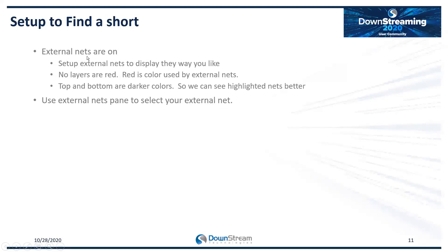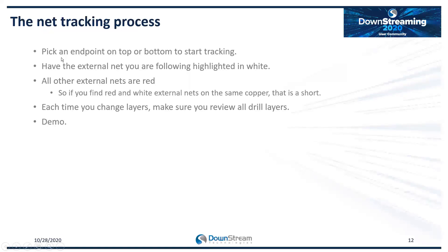Setup to find a short: make sure your external netlist is on. Set up external nets to display the way you like, and make sure no layer uses the same color as your external nets — red on red you can't see the details. Darker colors are my preference, as I can see highlighted nets much better. We'll use the External Nets pane to select our external net. The net tracking process: pick an endpoint on top or bottom, follow where the net goes. Your external net is highlighted in white, all other nets shown in red. If you find a spot where red copper and white external net overlap, that's your short.